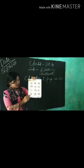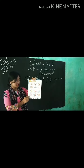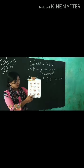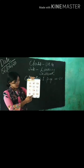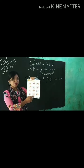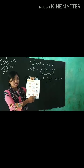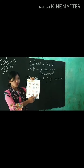J for Jump — J, A, M. Jump. K for Kangaro — K, A, N, G, A, R, W. Kangaro. L for Lion — L, I, O, N. Lion.